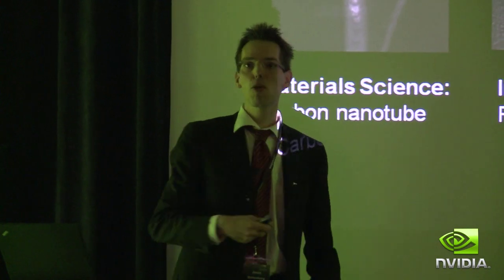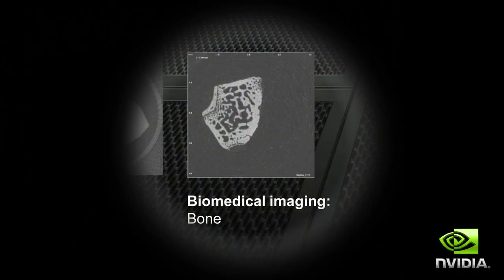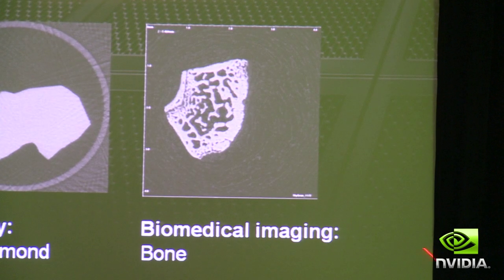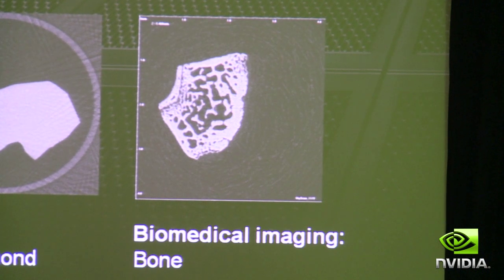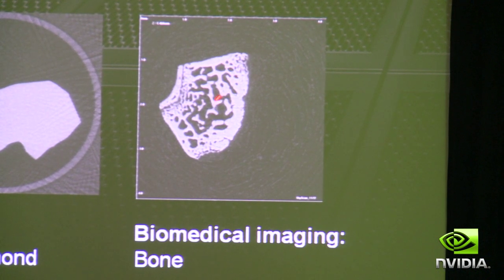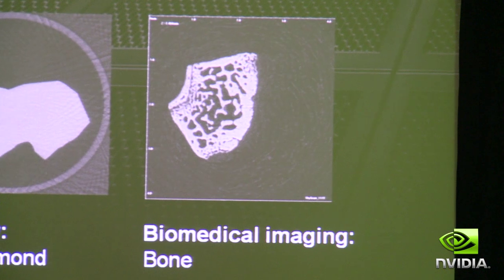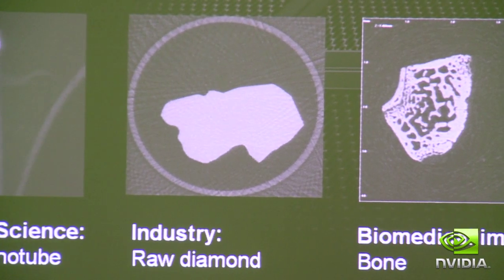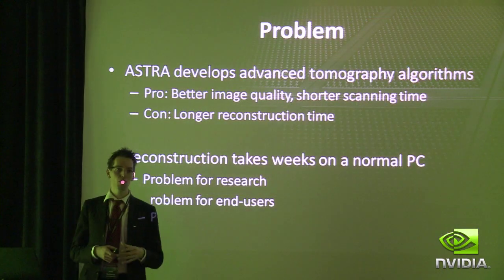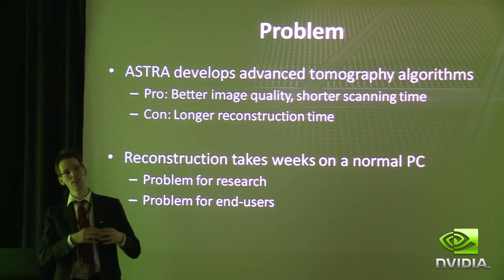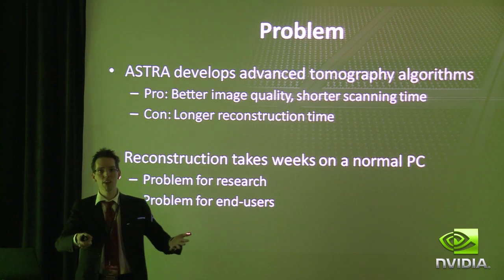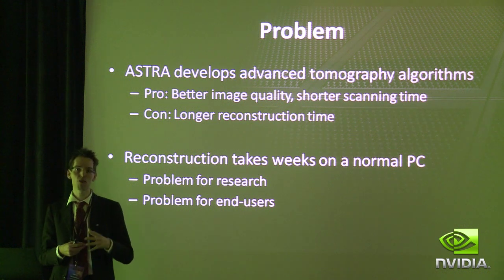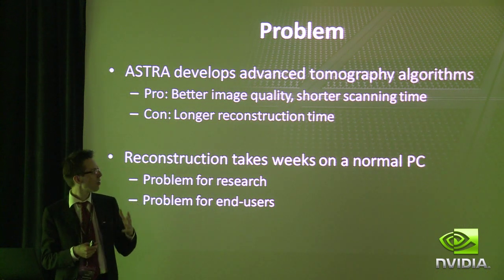Also in biomedical imaging — so when we don't talk about people, but perhaps about mice in research — making scans of bones, looking for medicines in osteoporosis research, you can do tomography in a micro CT scanner. Tomography has been around for a long time and it is computationally feasible. It is used in hospitals and you can get a reconstruction reasonably fast.